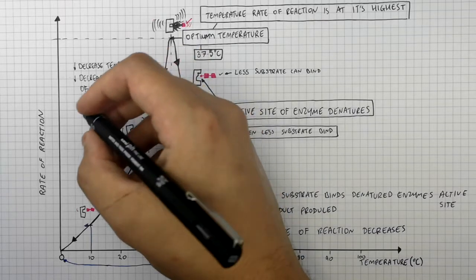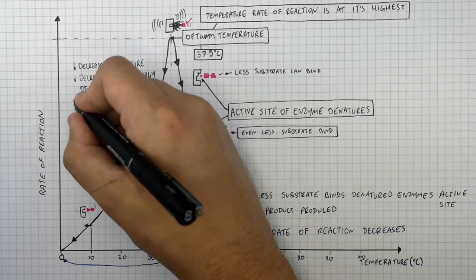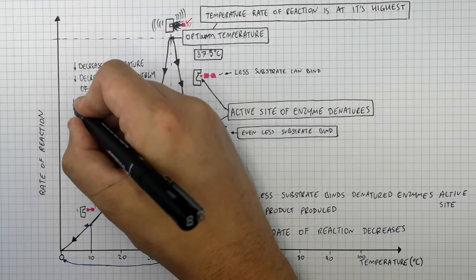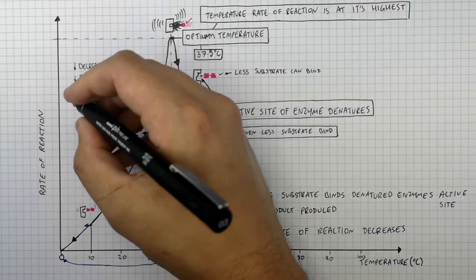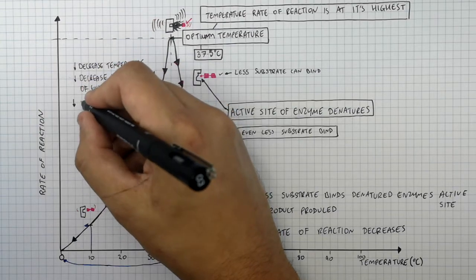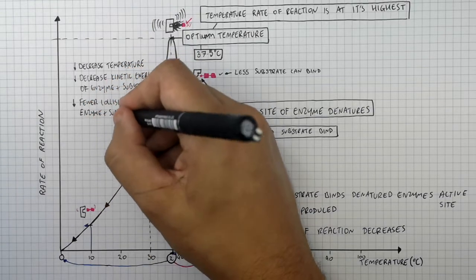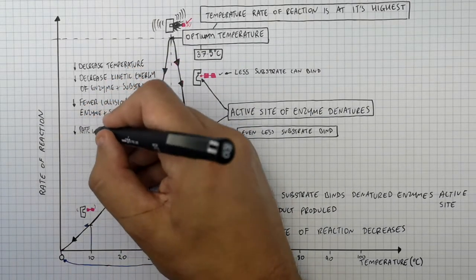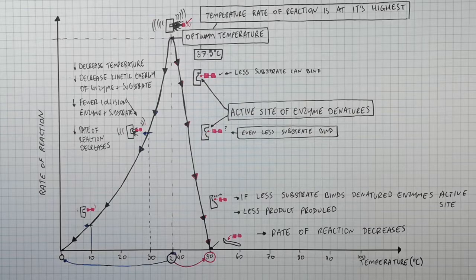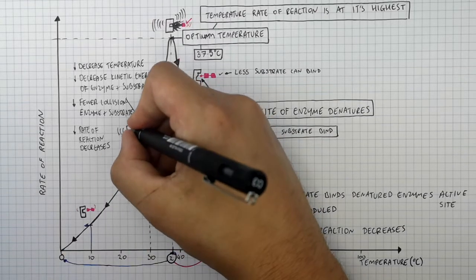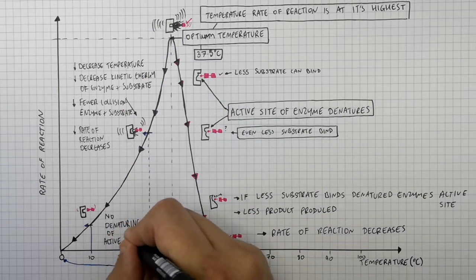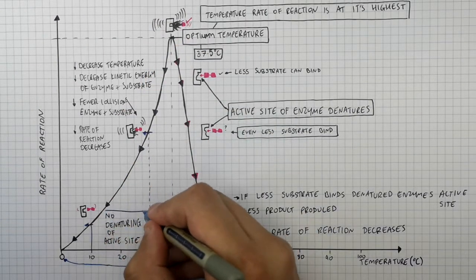There is lower kinetic energy in their kinetic energy store. If they are moving more slowly, there's going to be a decrease in the collisions between the enzyme and the substrate. So if there are fewer collisions between the enzyme and the substrate, the rate of reaction decreases and less product will be made. Remember, below the optimum temperature there is no denaturing of the active site.